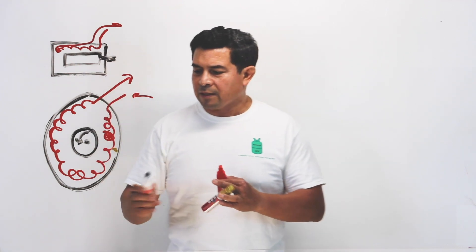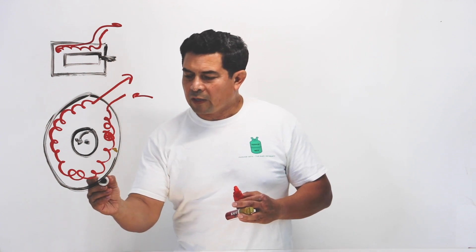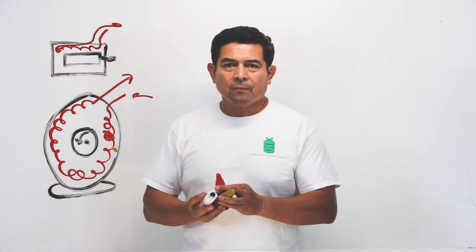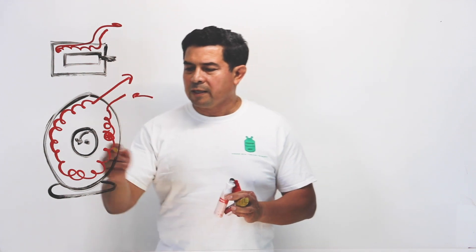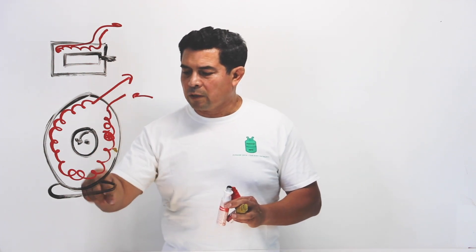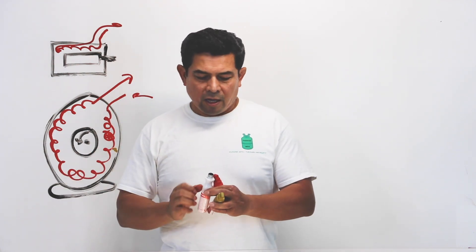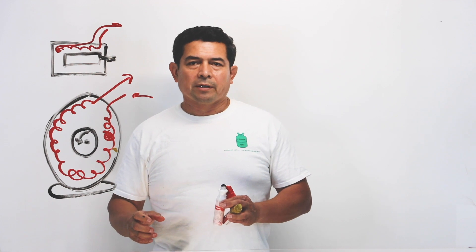Electricity always takes the path of least resistance. Because of that, it's going to come in here and go to the casing. Typically the motor casing is mounted on something, and what happens is the current travels through the mount and onto whatever it's attached to — and where does it go? It goes to ground.